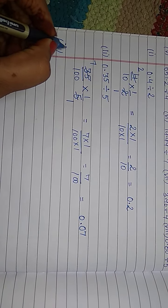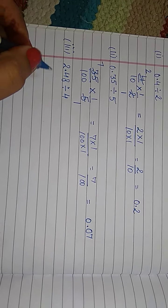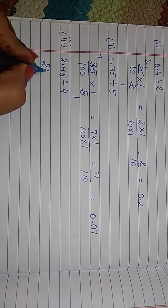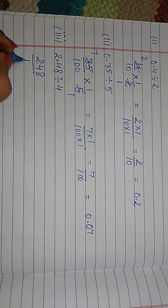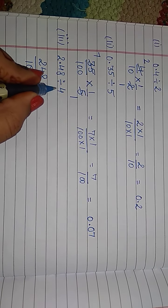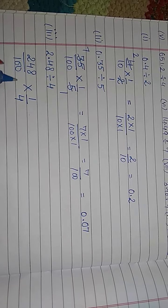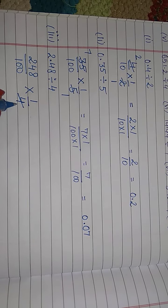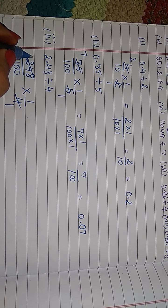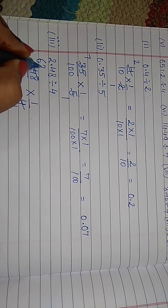Third one is 2.48 divided by 4. Now, remove decimal. 248 by 100. Division sign changes to multiplication. Take reciprocal of 4. That is 1 by 4. If diagonal cut to each other, you can cut. 4 1s or 4, 4 6 the 24. And 4 2s the 8.